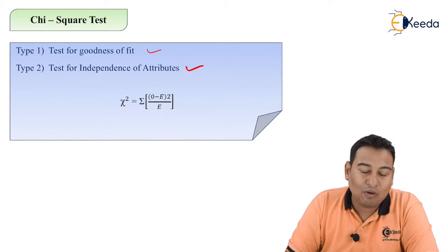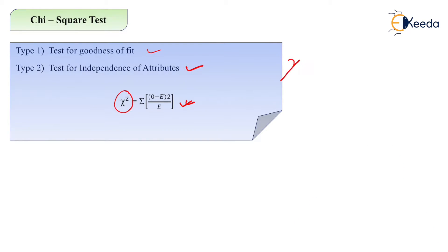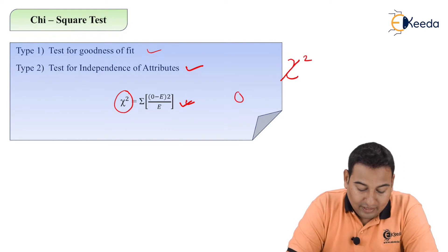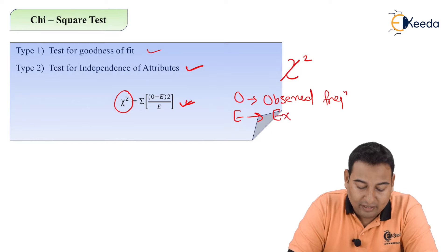The formula for chi-square is this. This is not x, this is chi-square symbol. O indicates observed frequency, E is expected frequency.